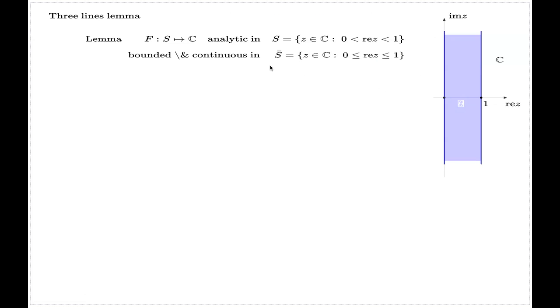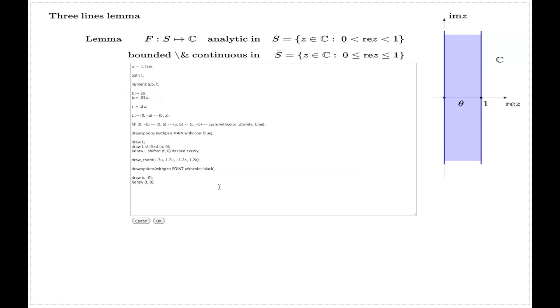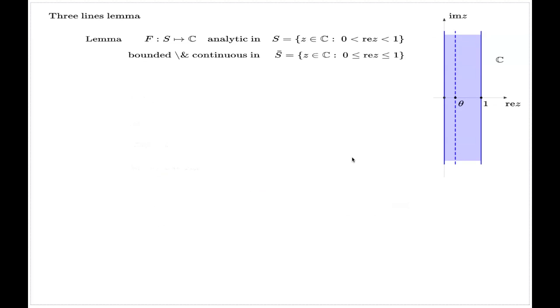Then you can conclude the following inequality, that if you take some middle point here, or in fact if you draw a vertical line for this middle point, then the absolute value of your function at this middle point is controlled by the product, where M₀ is the max of your function on the left-hand side of the strip, and M₁ is the max of your function on the right-hand side of the strip.